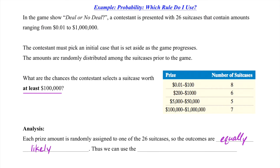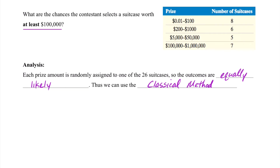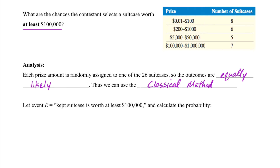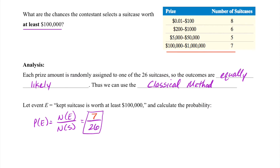We've got 26 suitcases to choose from, and since they're randomly assigned values, there's only one of each value. Therefore, each suitcase has an equally likely chance of having any specific value. Thus, we can use the classical method. We let event E be that the kept suitcase is worth at least $100,000. The probability of event E equals the number of ways E can occur over the number of outcomes in the sample space. Looking at the provided table, there are seven suitcases worth from $100,000 up to one million, so the number of ways E can occur is seven, and the sample space is 26. The probability is 7/26.